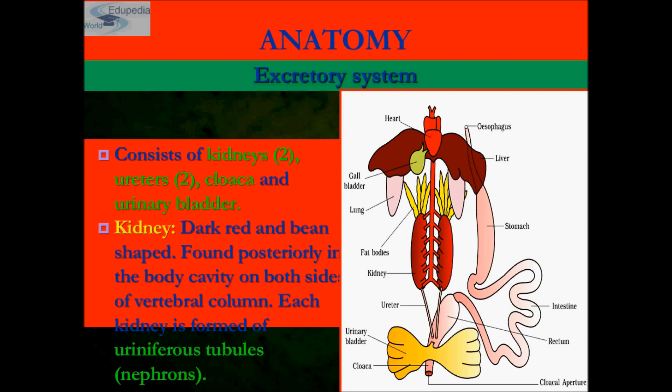The frog excretes urea and thus it is also known as a ureotelic animal. When we study the excretory system in humans, we will learn about the three forms: ammonotelic, ureotelic, and uricotelic.